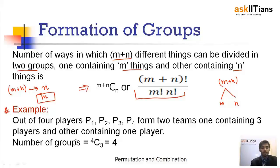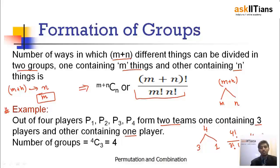Let's see this through an example. Out of four players P1, P2, P3, P4, two teams are to be formed — one containing three players and the other containing one player. The number of ways of doing this is 4! / (3! × 1!) = 4.